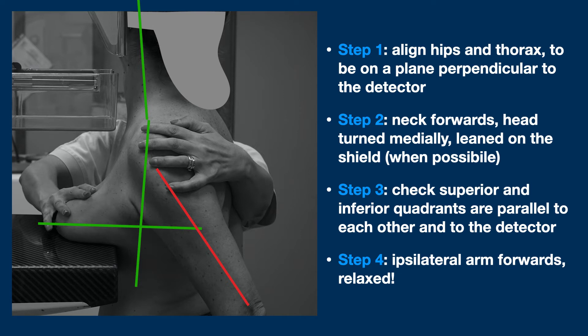Let's summarize: First, thorax and hips aligned, thorax perpendicular to the detector. Second, neck forwards, head turned, leaned on the shield. Third, check parallelism between superior and inferior quadrants and to the detector. Fourth, arm forwards — this is important — and relaxed.